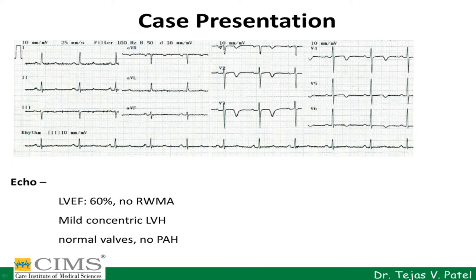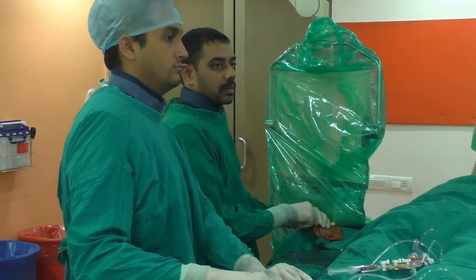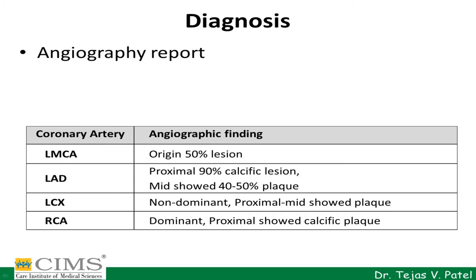His cardiogram showed symmetric T-wave inversion in the anterior chest leads, which is equivalent to Wellens' sign and is suggestive of LAD left anterior descending artery lesion. His echocardiogram was suggestive of normal LV ejection fraction, no regional wall motion abnormality, but had mild concentric LVH. Other valves were normal. He was admitted for angiography, and subsequent angiography showed the left main coronary artery had a 50% lesion at its origin.